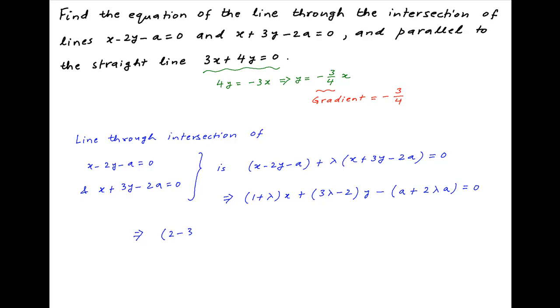This can be written as 2 minus 3 lambda times y is equal to 1 plus lambda times x minus a times 1 plus 2 lambda.